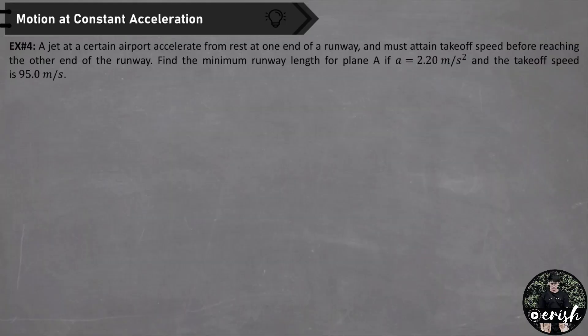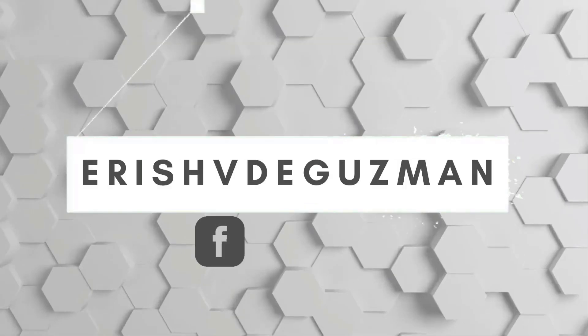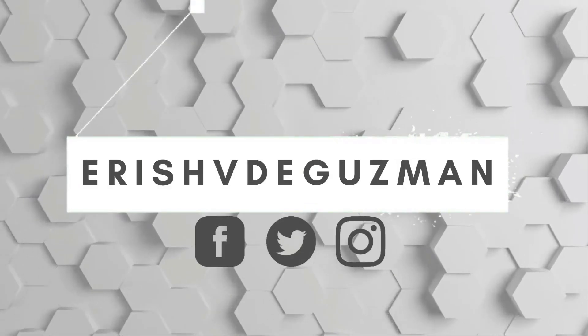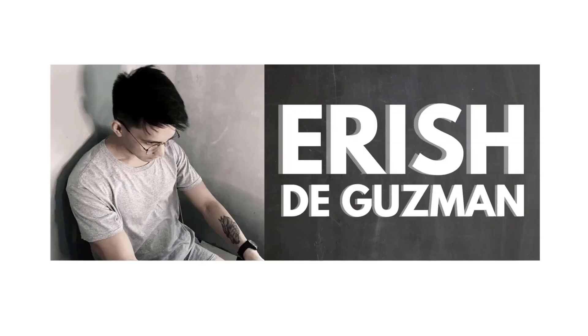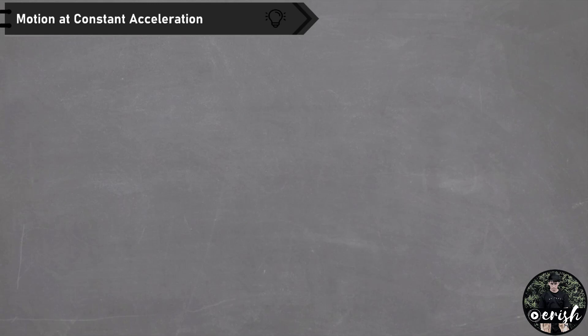A jet at a certain airport accelerates from rest at one end of a runway and must attain takeoff speed before reaching the other end of the runway. Find the minimum runway length for plane A if the acceleration is equal to 2.20 meters per second squared and the takeoff speed is 95 meters per second.